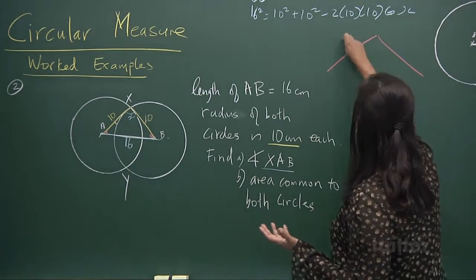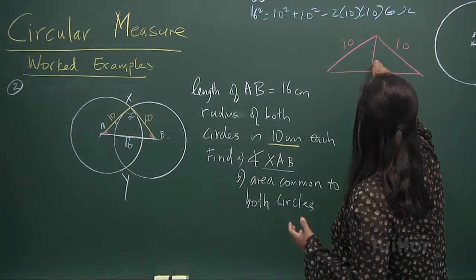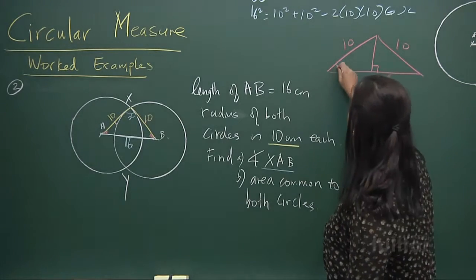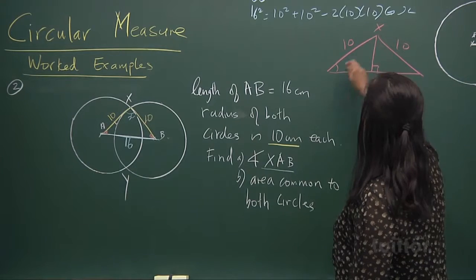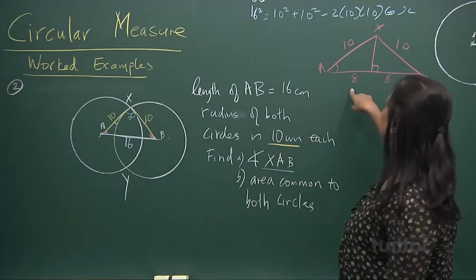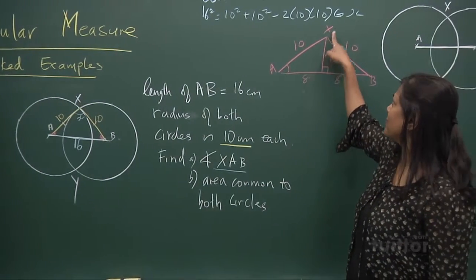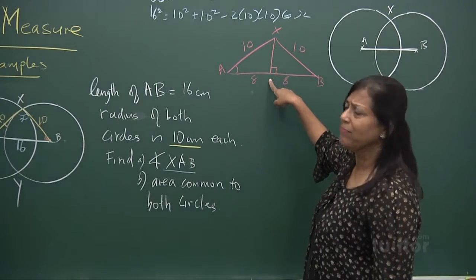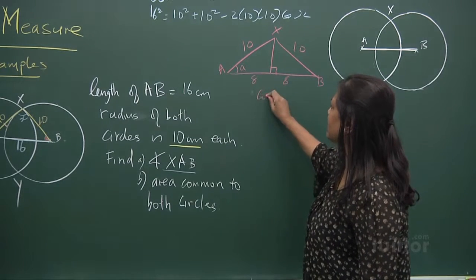Because let me tell you, this is 10, 10, that's 16. And you can cut this into two equal parts, 8, 8. And you want to find out what is this angle. Let's call x, A, B. And I would use, what would I use? Cosine. Cosine x, A, B. I can take this point here. Let's be, I'll call this small a.